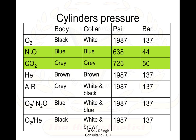It is very important to note the cylinder pressures. Oxygen is at either 1987 psi or 137 bar. Nitrous oxide is at 638 psi or 44 bar, whereas carbon dioxide is at 725 psi or 50 bar. Oxygen, helium, Entonox, and heliox are all at the same pressure of 137 bar. So essentially you just need to know two key values: 44 bar for nitrous oxide and 137 bar for oxygen.